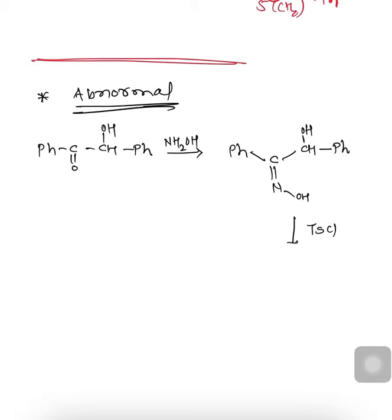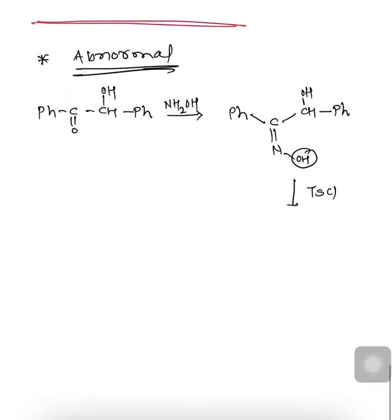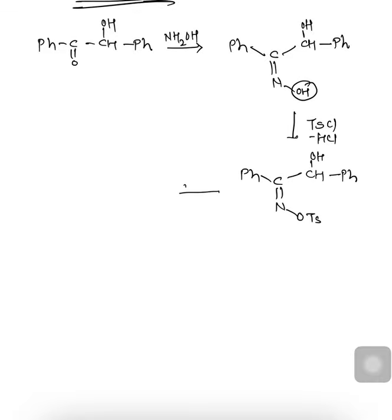Suppose we carry out reaction in presence of tosyl chloride (TsCl). The OH group is converted to a tosylate (OTs) group, with elimination of HCl. So we get Ph-C(=N-OTs). The purpose of converting OH to OTs is making it a better leaving group. In the next step, Ph migrates toward the nitrogen atom and OTs is eliminated (in earlier examples, H2O+ was eliminated; here OTs leaves). After migration, Ph is attached to nitrogen, giving a C=N-C+ system.